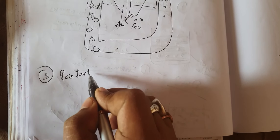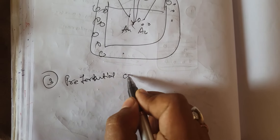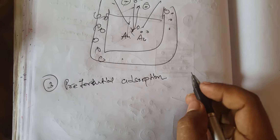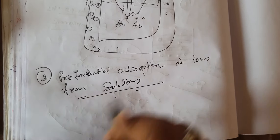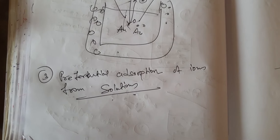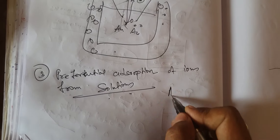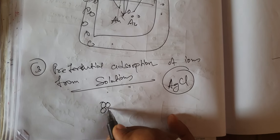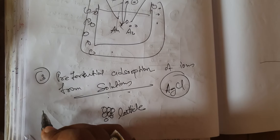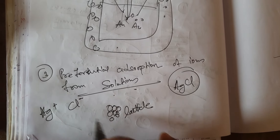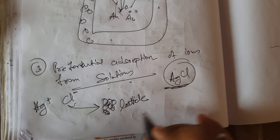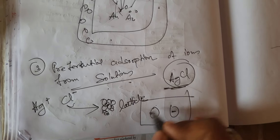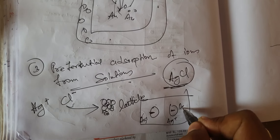The third reason for getting charged is preferential adsorption of ions from solutions. Suppose an ionic colloid such as AgCl is present. According to the lattice structure of AgCl, the particles can absorb Cl⁻ ions into their lattice, making the colloidal particles negatively charged. The Ag⁺ ions disperse into the solution, making it positively charged.